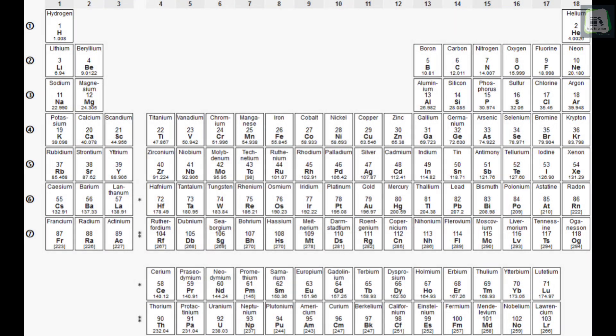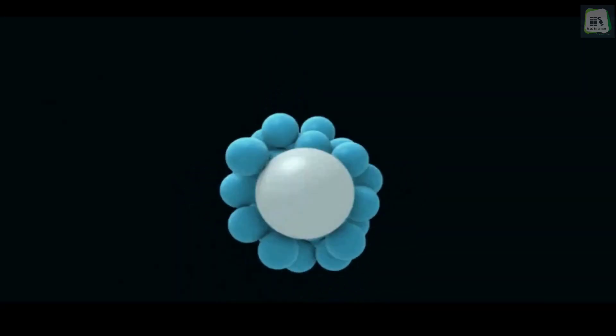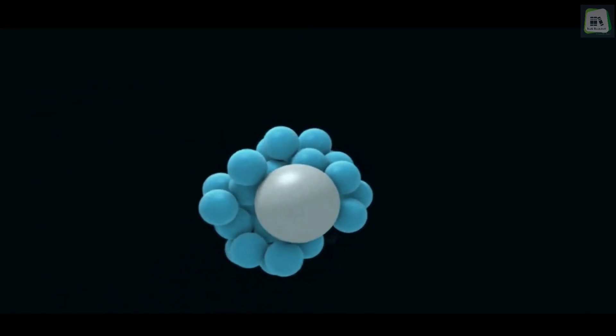For example, hydrogen is 1 on this table and iron is 55. This means that an atom of iron is 55 times as heavy as an atom of hydrogen.